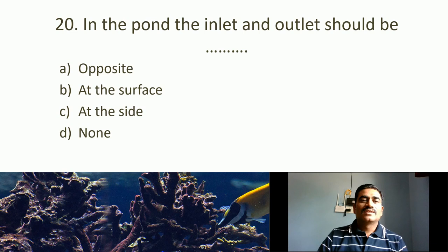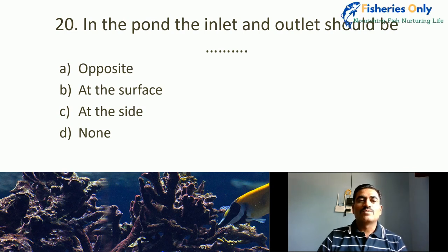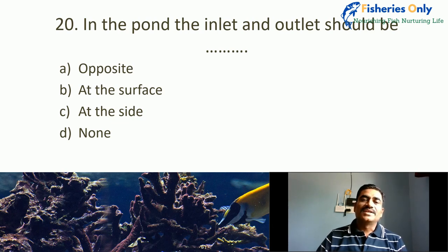Twentieth MCQ: In the pond, the inlet and outlet should be what? Options: opposite, at the surface, at the side, none. For well-draining of the pond, for easy operating system, the inlet and outlet should be in opposite directions so the pond bottom soil can be discharged while dewatering. The right answer is opposite.